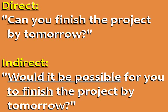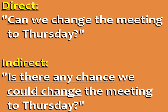Direct: 'Can you finish the project by tomorrow?' Indirect: 'Would it be possible for you to finish the project by tomorrow?' For questions with the word 'can,' we use 'would it be possible' in the indirect question. Also, we say 'to finish' instead of 'finish.' Direct: 'Can we change the meeting to Thursday?' Indirect: 'Is there any chance we could change the meeting to Thursday?' 'Is there any chance' is another way to ask an indirect question when the direct question begins with 'can.' We also use 'could' before 'change' in the indirect question.